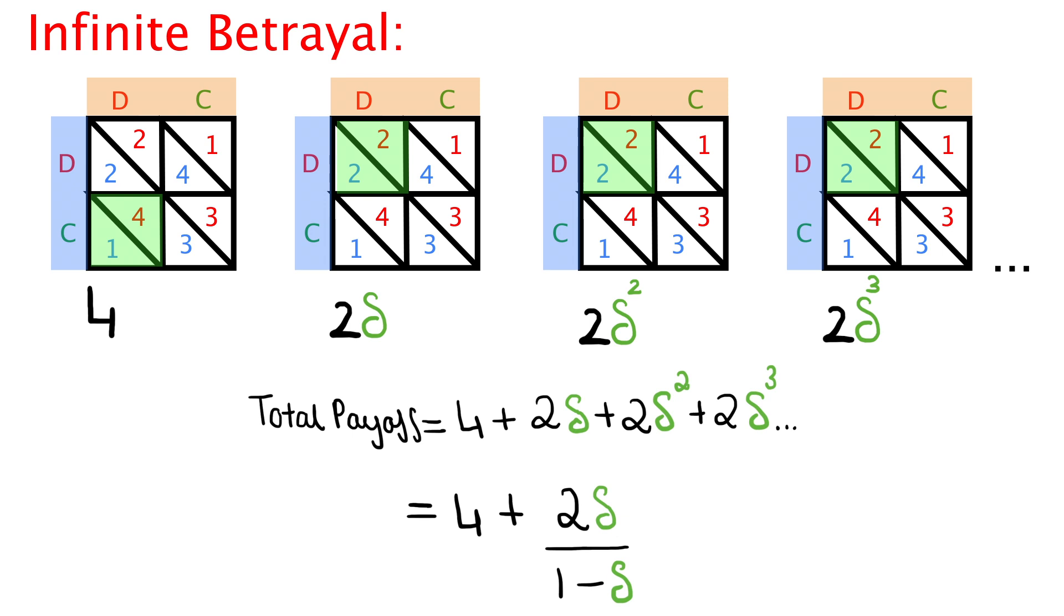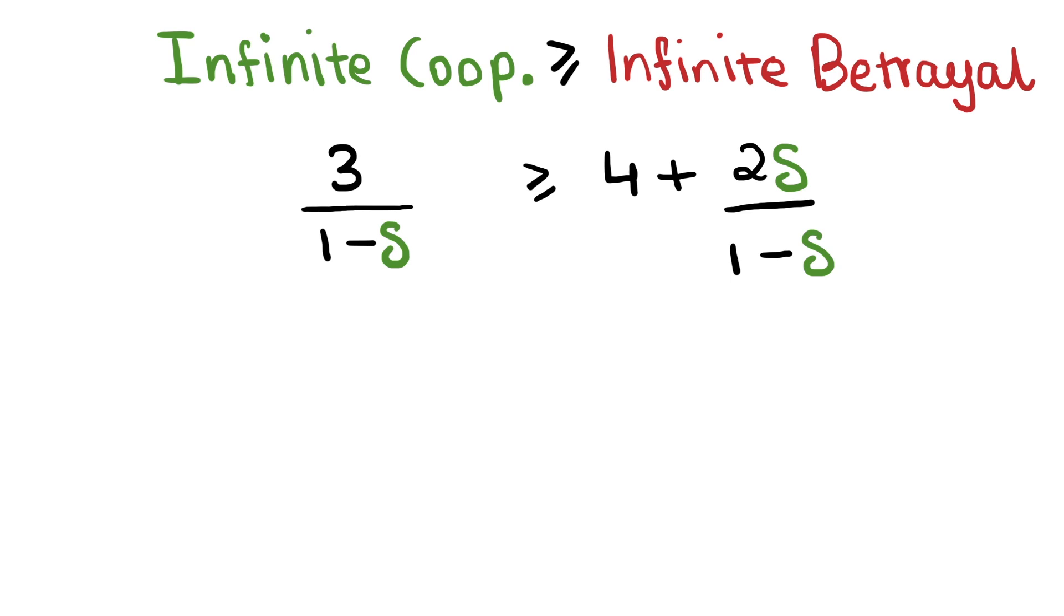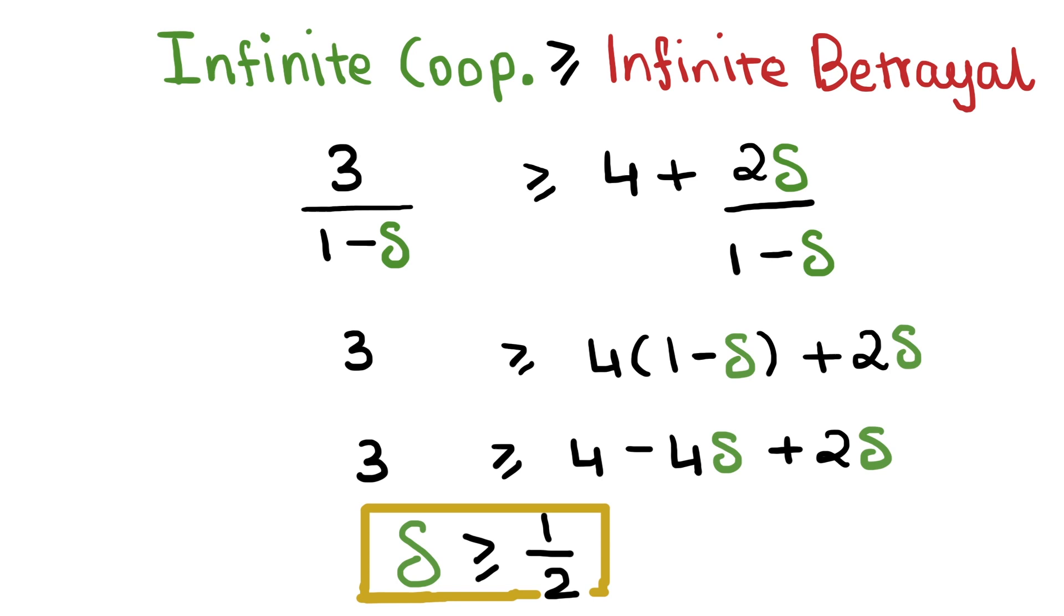For this trigger strategy to be feasible, the total payoff of infinite cooperation must be greater or equal to the total payoff earned for infinite betrayal. And this effectively means that 3 by 1 minus delta must be greater than or equal to 4 plus 2 delta divided by 1 minus delta. If we multiply 1 minus delta on both sides, expand the brackets, and simplify this algebraic expression, we get that delta must be greater than or equal to half.